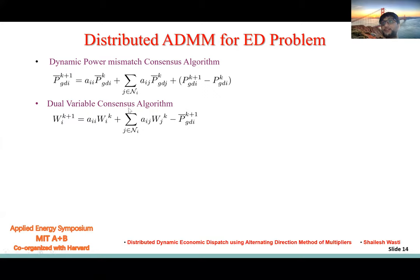To localize those global variables, we have this dynamic power mismatch consensus algorithm and dual variable consensus algorithm. With the consensus algorithm I presented before, now each agent can estimate the average mismatch of the whole network based on the information of its neighbors, and this is the dynamic part. This is the dynamic average consensus, and this one is each agent can estimate the dual variable using average consensus, and adjust this dual variable to clear the market.